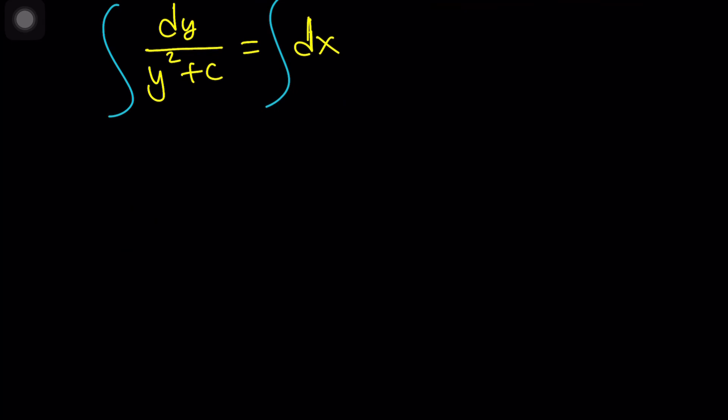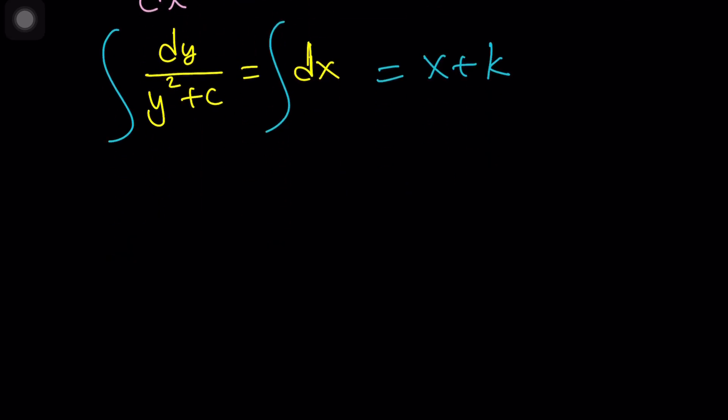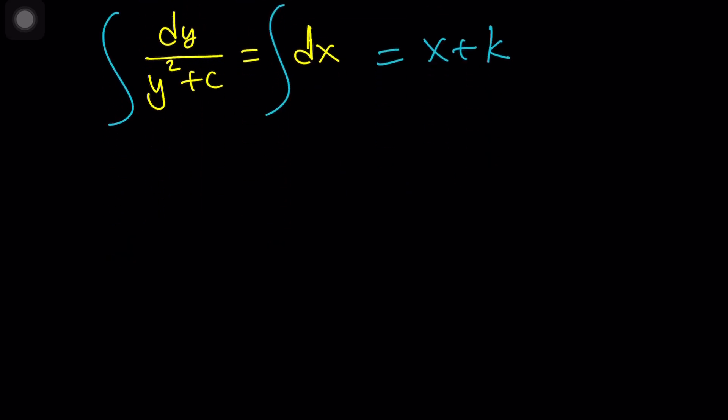So I want to bring the y squared plus c over here, and put the dx on the right-hand side. And of course, our next step, once we separate the variables, would be to integrate both sides. And then when you integrate dx, it's fairly easy. It's just going to be x plus c. Easy. What about the left-hand side? But again, I already used the c, so maybe I should use a k. Let's just use a different constant, because it doesn't have to be the same.